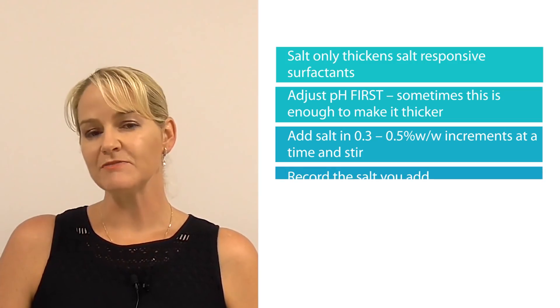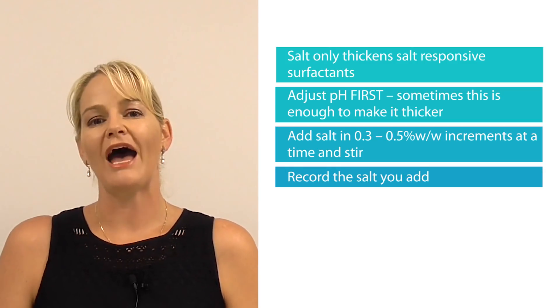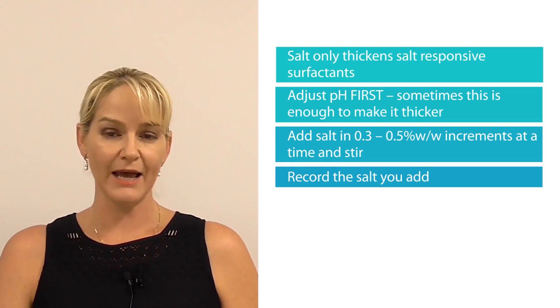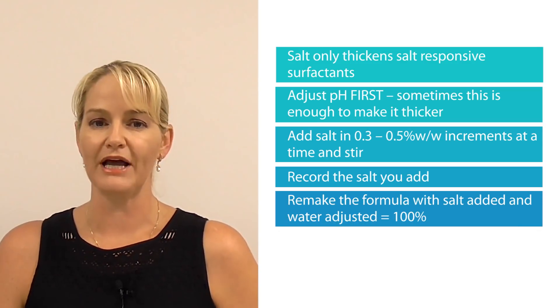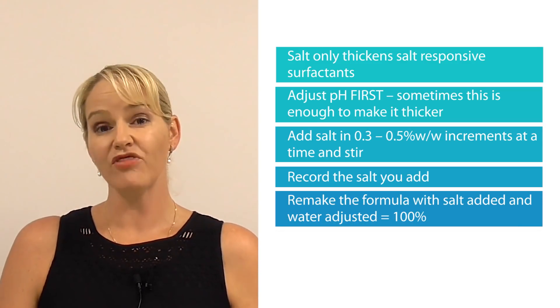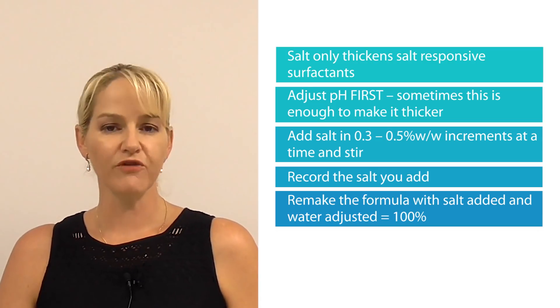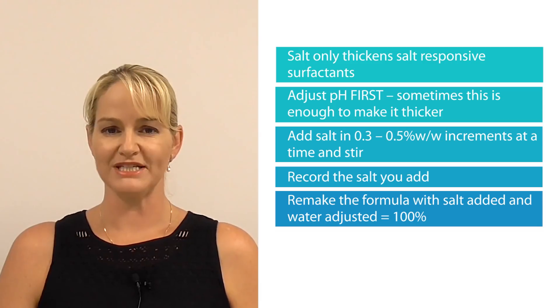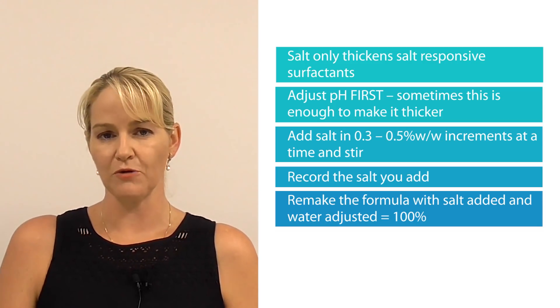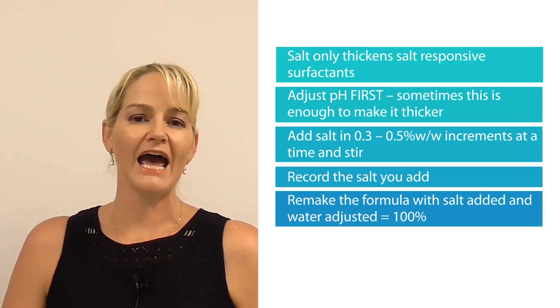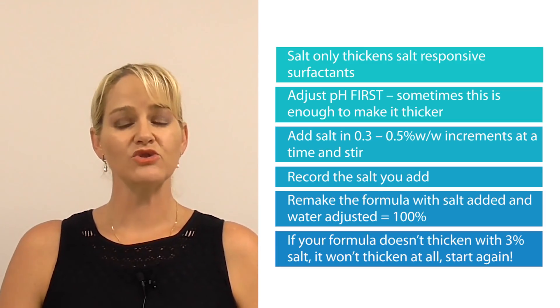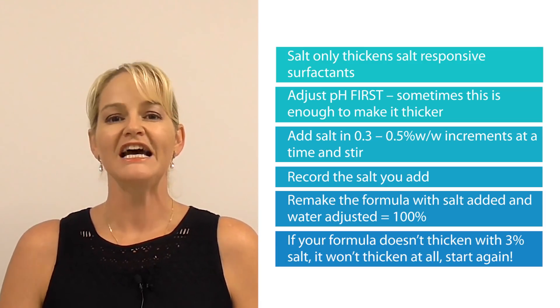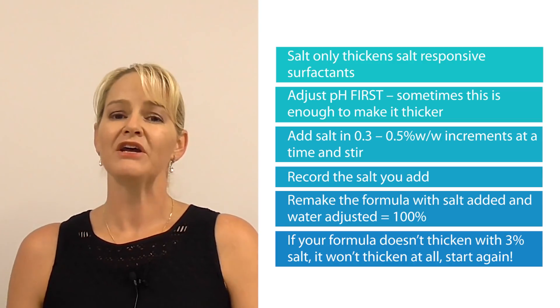Make sure you make adjustments and record the salt you add in your formula at the lab stage, then repeat the formula with the salt added and the water adjusted in another sample before scaling up, so that your formula totals 100% and not more with the addition of salt. If you need to add about 3% of salt and you're still not getting a viscosity-increasing effect, then it's not going to happen — throw that sample out and start again because salt's not going to thicken your system.